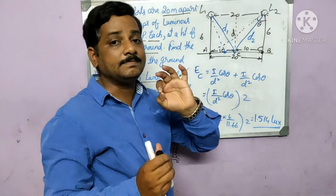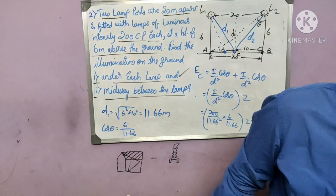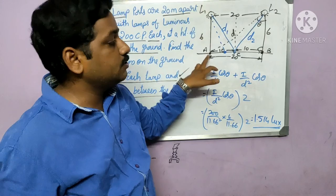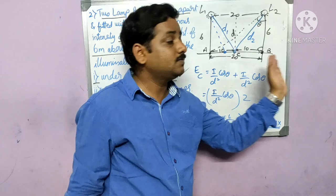Comparing results: the illumination under each lamp is about 5.888 lux, while at the midpoint it is only 1.514 lux. This confirms that illumination is highest directly below the lamp and decreases as we move further away from it.